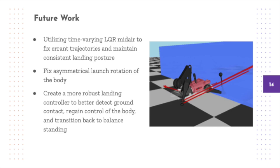Fortunately, there is always more work to be done. Three of the biggest pieces of work we'd like to add in the future are the addition of time-varying LQR to our mid-flight control in order to correct for any anomalies in our flight trajectory and have a more consistent landing profile, fix the issues with the robot rotating slightly on takeoff causing an uneven landing more heavily on the left leg.